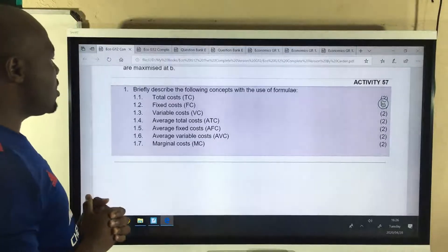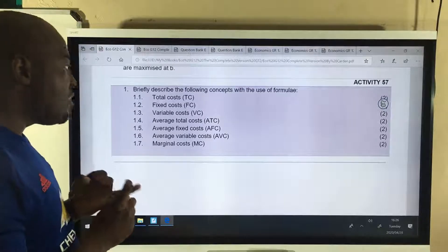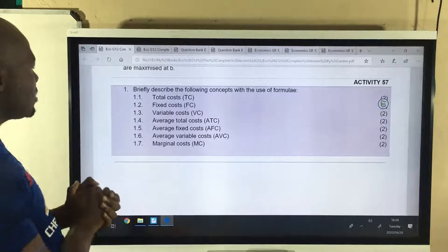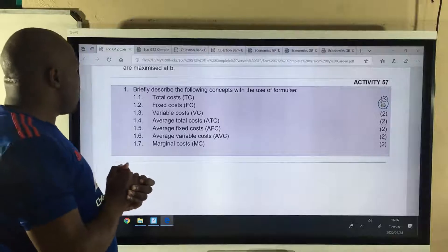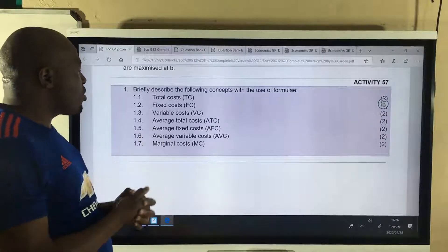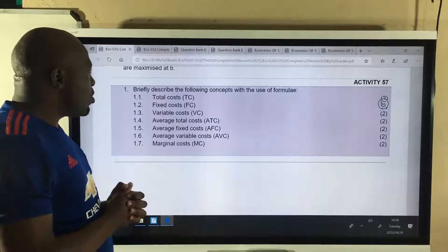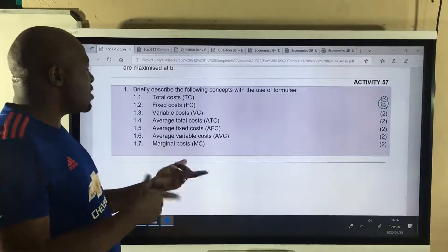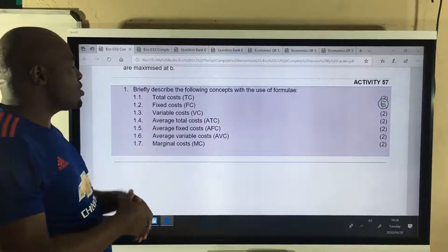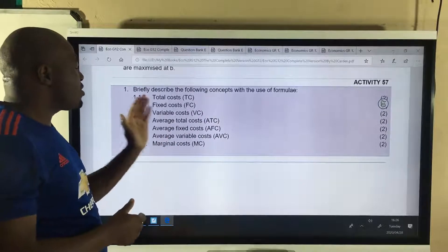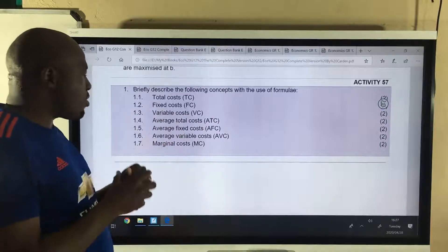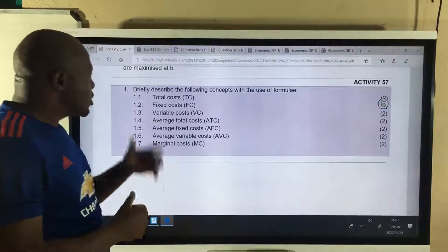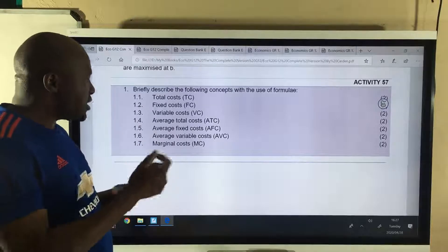What is the formula for calculating total cost? It's average cost plus total fixed cost. What is the formula for calculating fixed cost? It's average variable cost times the quantity. How about variable cost? Average variable cost times the quantity. Average total cost, that would be total cost divided by the quantity. Average fixed cost, fixed cost divided by the quantity. Average variable cost, that would be variable cost divided by the quantity. And marginal cost, change in total cost divided by change in quantity.